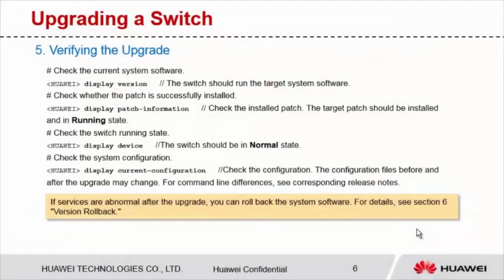After completing upgrade operations in the command line interface or boot ROM menu and restarting the switch, we need to check whether the upgrade succeeds. We need to check the current system software version, whether the patch is successfully installed, the switch's running status, and whether the system configuration is lost. If services are abnormal after the upgrade, you can roll back the system software. The rollback procedure is similar to the upgrade procedure and includes loading the rollback package, performing the rollback, and verifying the rollback. The rollback procedure is not covered in this course.